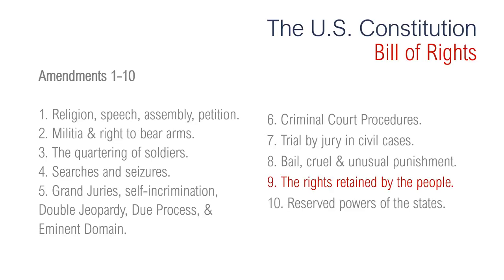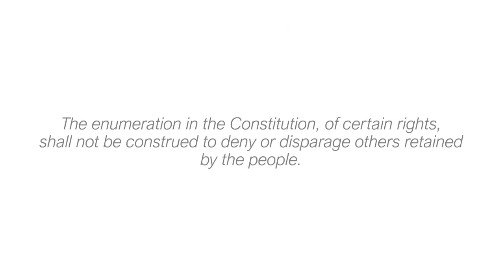The Ninth Amendment is about the rights retained by the people. It says the enumeration in the Constitution of certain rights shall not be construed to deny or disparage others retained by the people. Many civil rights that are not explicitly enumerated in the Constitution are still held by the people.